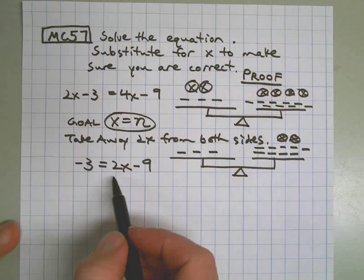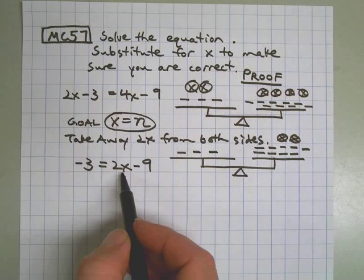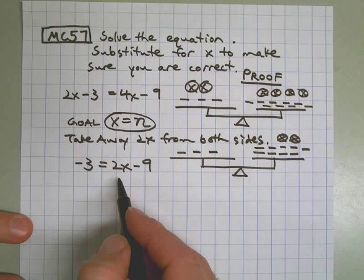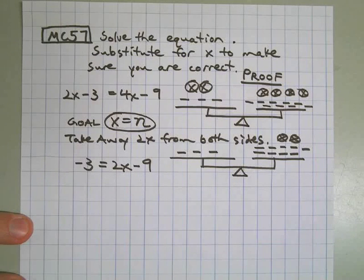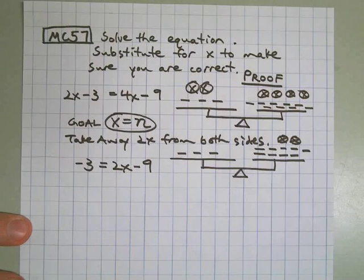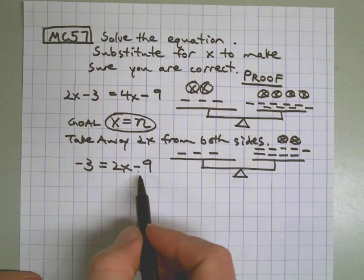Now I have my x's on one side. I want to get my numbers together on the other side. So I want to think, what can I do to both sides so that I can get rid of this 9 over here, this negative 9? Well, I could add 9 to both sides.